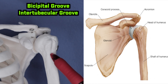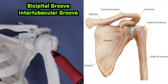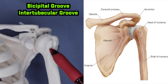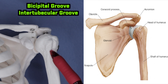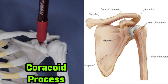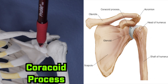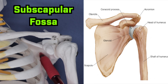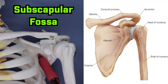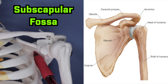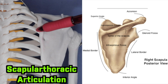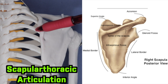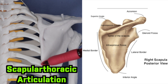In between the tubercles, we have another space where muscles run through known as the bicipital groove or the intertubercular groove. Medial to the humerus, we have this bump known as the coracoid process, and right below it we have the origin for one of the main internal rotators of the shoulder, which is the subscapular fossa. As we move posteriorly, we can see that the ribs meet the scapula, known as the scapulothoracic articulation.